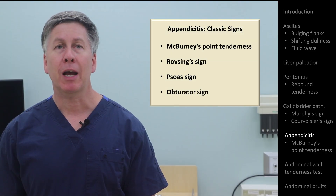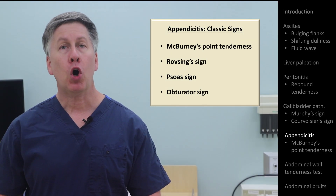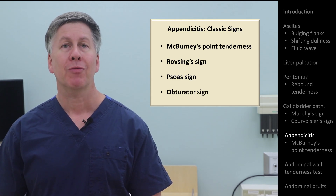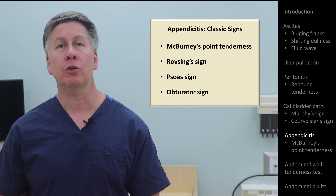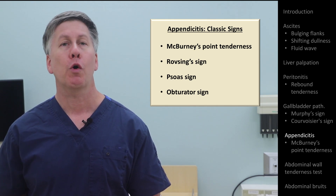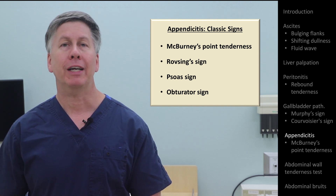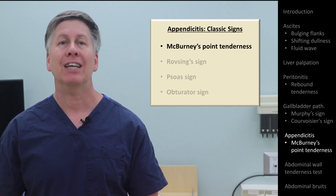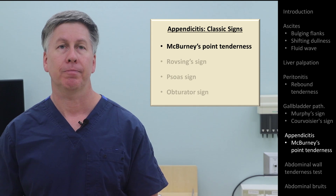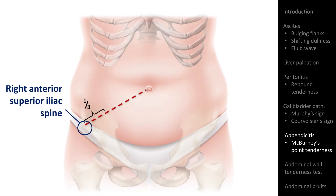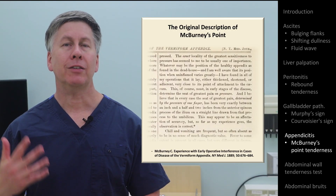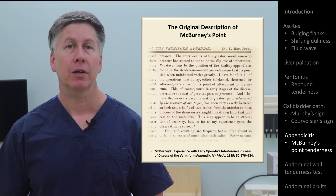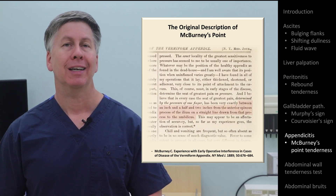There are four findings within the abdominal exam classically associated with appendicitis. While all have some evidence behind them, that evidence is relatively modest, and contemporary practice includes the near ubiquitous use of abdominal imaging for patients presenting with acute abdominal pain. Therefore, I only teach assessment for tenderness at McBurney's point as the only physical exam finding to check here. McBurney's point is located one-third of the distance between the right anterior superior iliac spine and the umbilicus, above the most common location of the base of the appendix. Interestingly, the 19th-century surgeon Charles McBurney, for whom the point is named, did not actually describe its location in precisely the same way.